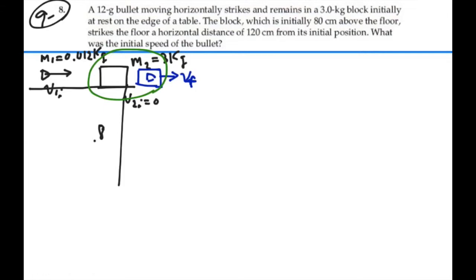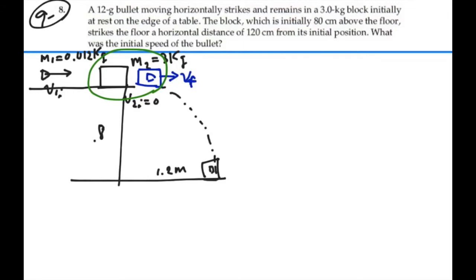We have a collision, and the only thing we can be sure of is that momentum will be conserved. Kinetic energy will not be conserved because it's a perfectly inelastic collision. After the collision, the block will proceed forward under kinematics. It will fly forward and strike the ground with the bullet in it at a point 1.2 meters forward. So delta x is 1.2 meters and delta y is 0.8 meters.